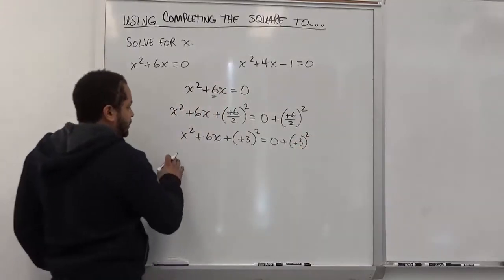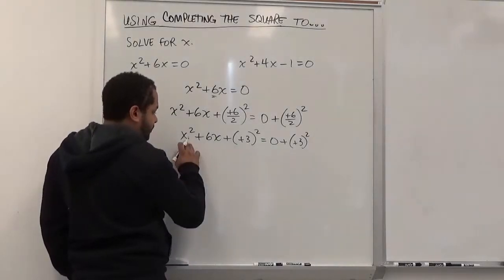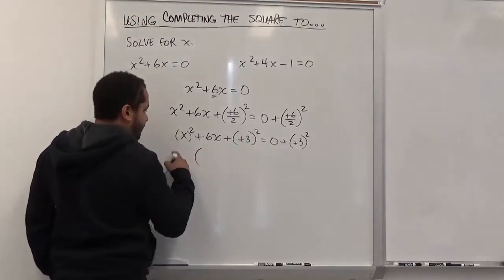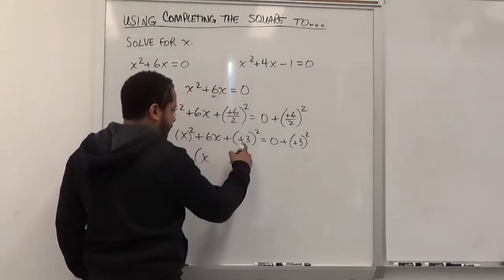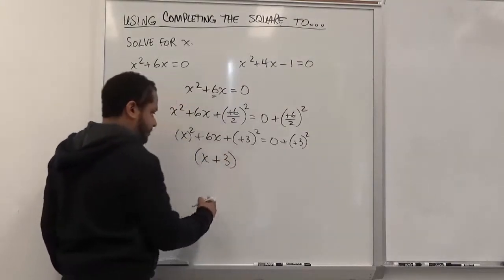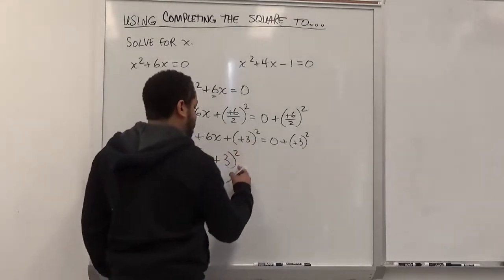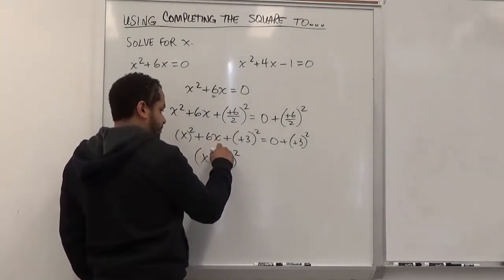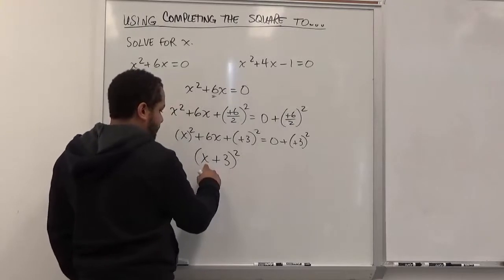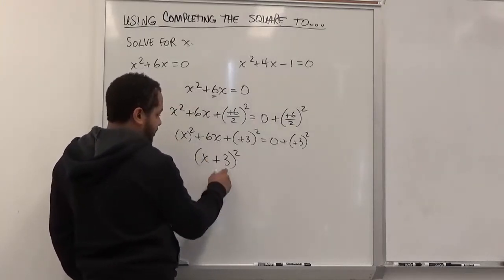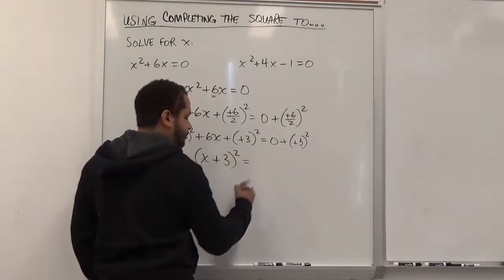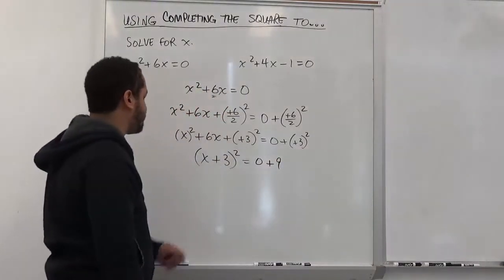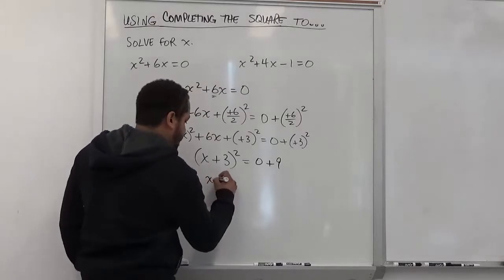Now we're going to complete the square on the left hand side. We take the term that's being squared and place it in the parentheses. On the left hand side we have just an x, and on the right of this equation we have a positive 3, so we bring the sign with the term into the parentheses and we continue to square the term. This makes the perfect completed square where we have a squared plus 2ab plus b squared, where a is x and b is 3 — so 2 times 3 times x is 6x. On the right hand side, 0 plus 3 squared is 9. No matter the sign on this it's always going to be a positive 9. So now we have our completed square.